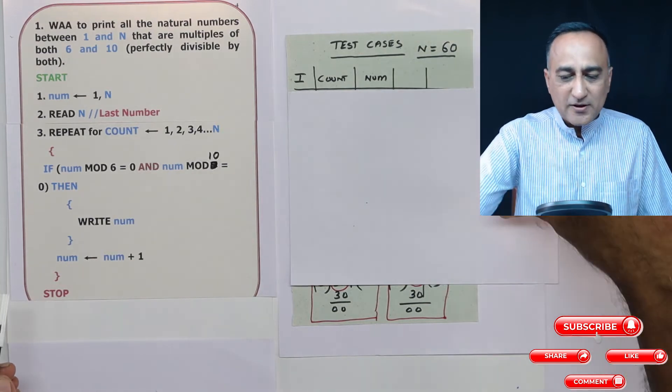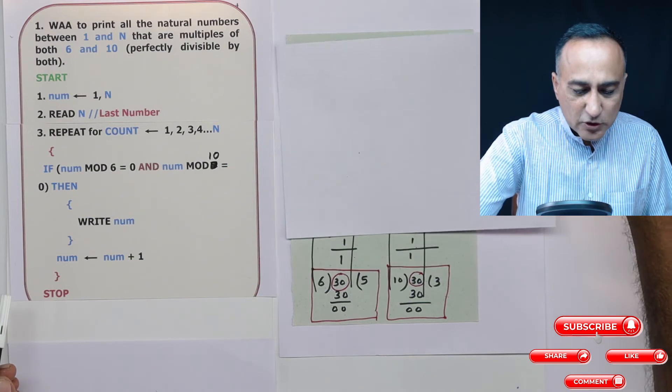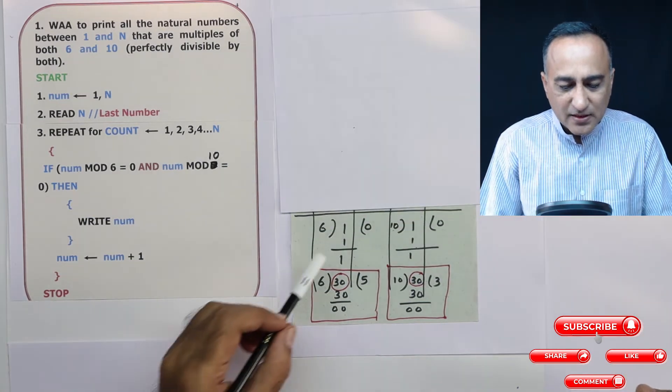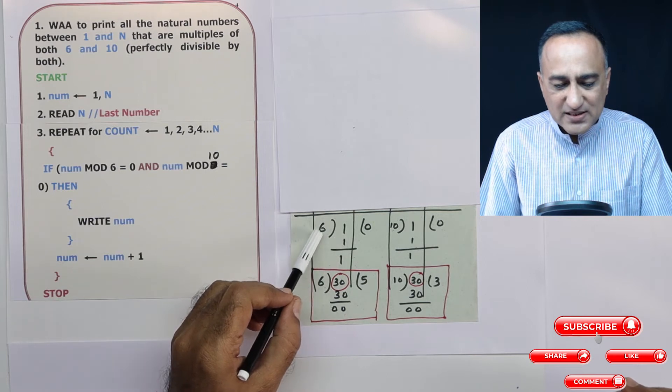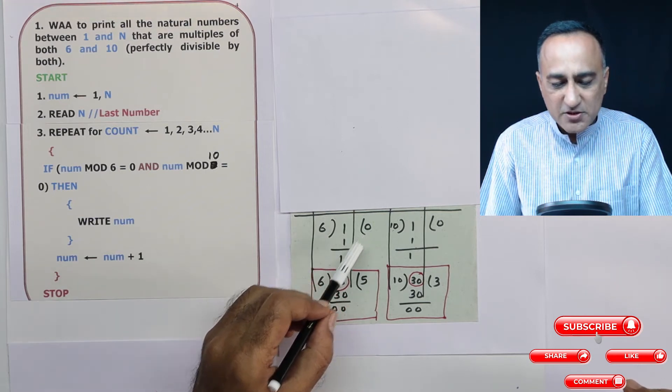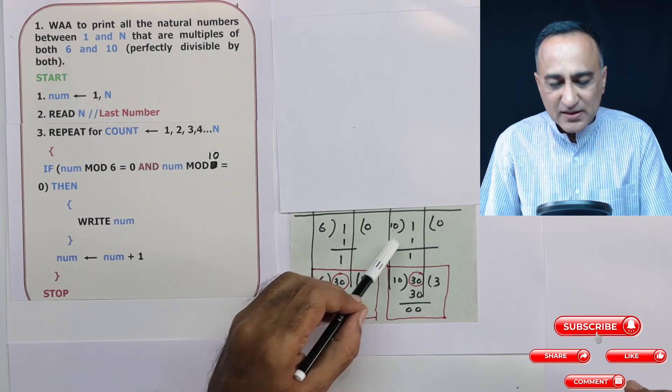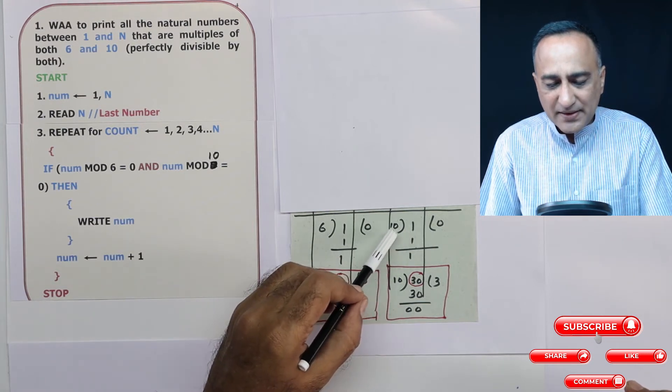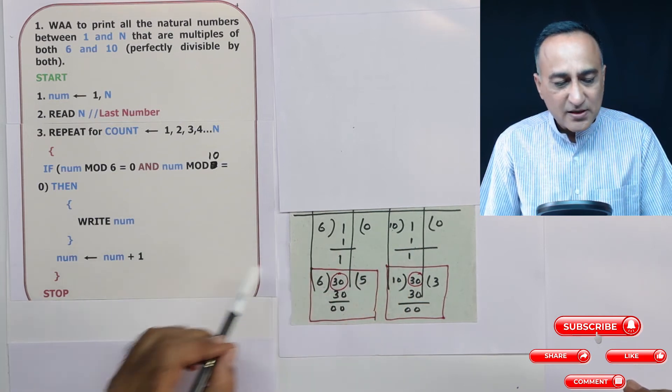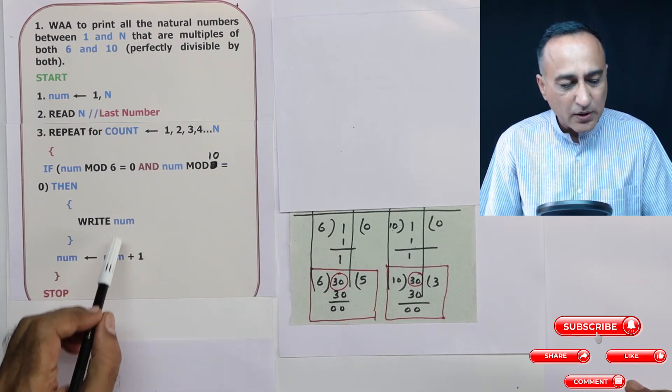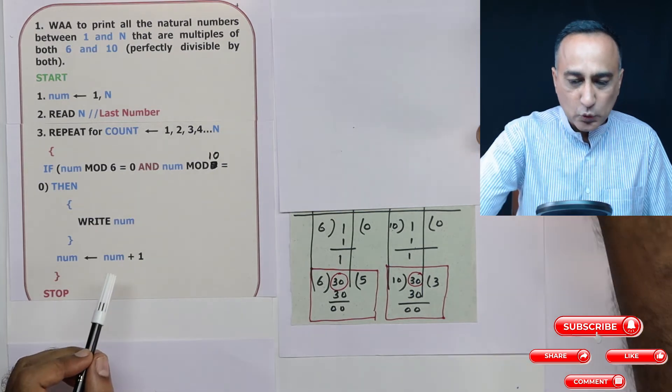Let's start with the first number. If you start with the first number, which is one, if you try to divide one by six, one cannot be divided by six, so the quotient is zero, remainder is one. Similarly, if you try to divide one by 10, the quotient is zero, remainder is one. So in this case, it will not print one. Number now becomes two.